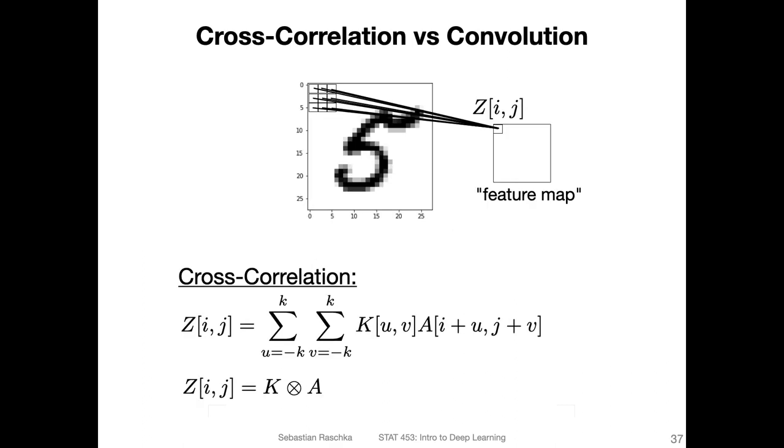It's computed with these two sums. The product is if we would actually reshape that into two vectors. If we have this weight matrix, we could just reshape them as a vector and then compute the dot product between the two.